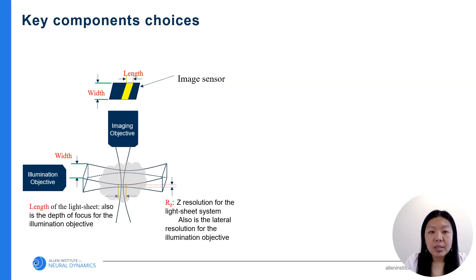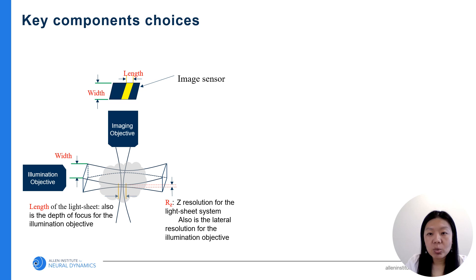This is a simplified illustration of a SPIM system, or light sheet system. The X and Y resolution are defined by the imaging objective and the camera. The Z resolution is defined by the illumination device. The maximum sample size is decided by the working distance of both objectives.